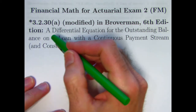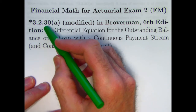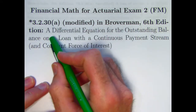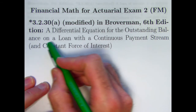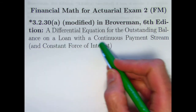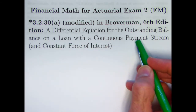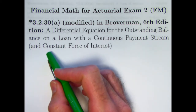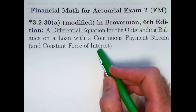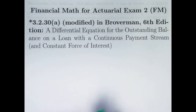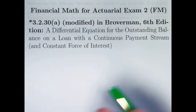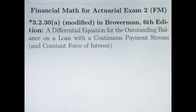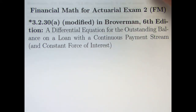Hello. This video is about a modified form of problem 3.2.30a, a starred problem in Broverman — a differential equation for the outstanding balance on a loan, where we're paying it back with a continuous payment stream, with a constant force of interest. This is going to be one of my longest, most abstract videos in this series, but it's really important. I hope you try to watch it anyway, take notes and pause it. It is abstract, difficult, and long, but stick with it.